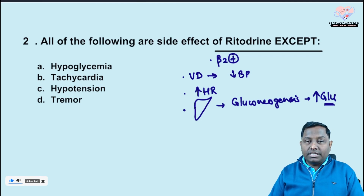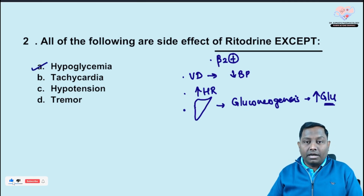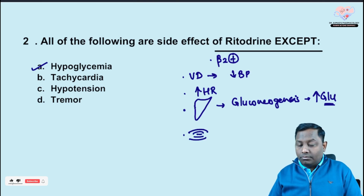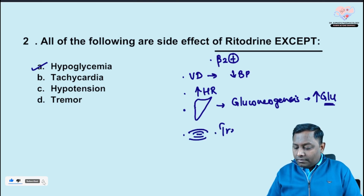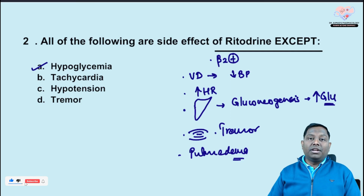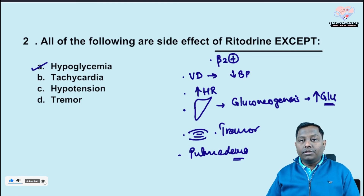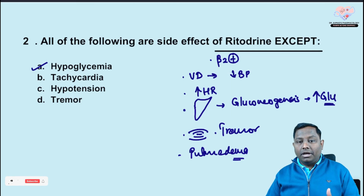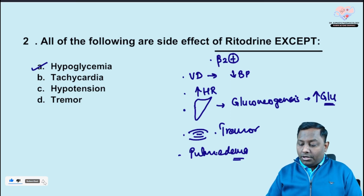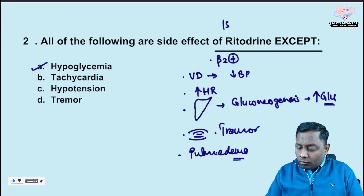Since ritodrine causes gluconeogenesis and glycogenolysis, glucose levels rise — leading to hyperglycemia, not hypoglycemia. So ritodrine does not cause hypoglycemia. Its side effects include tachycardia, hypotension, and tremor — because beta-2 of skeletal muscle gets stimulated. It is also known to cause pulmonary edema, possibly by reducing capillary tone through vasodilation.